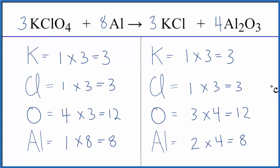This is Dr. V with the balanced equation for potassium perchlorate plus aluminum yields potassium chloride and aluminum oxide. Thanks for watching.